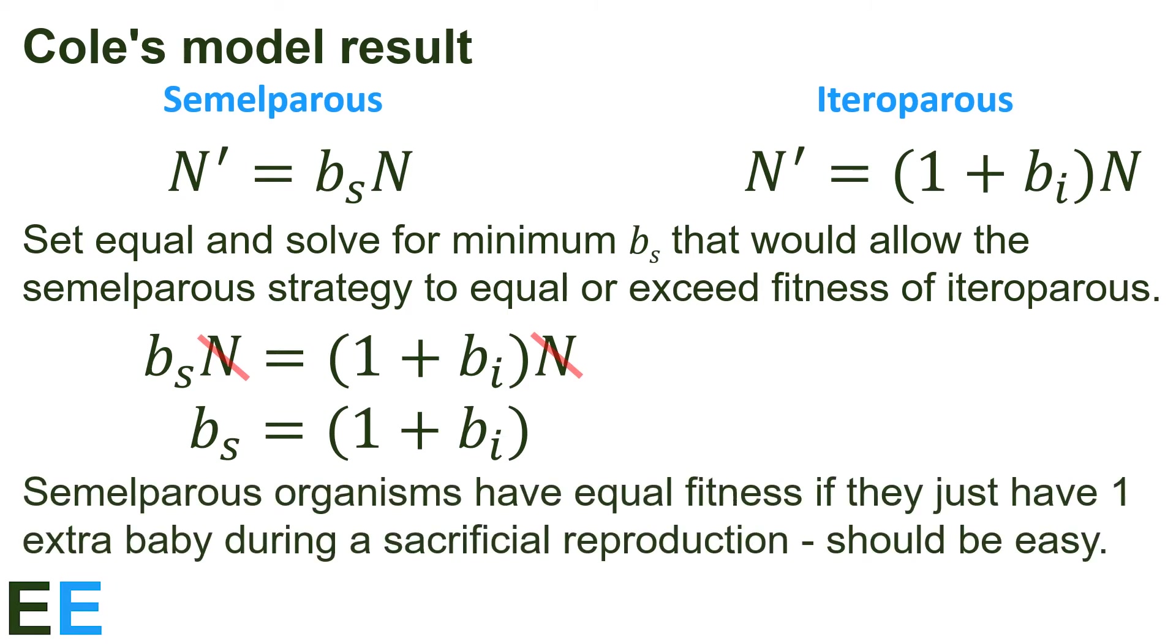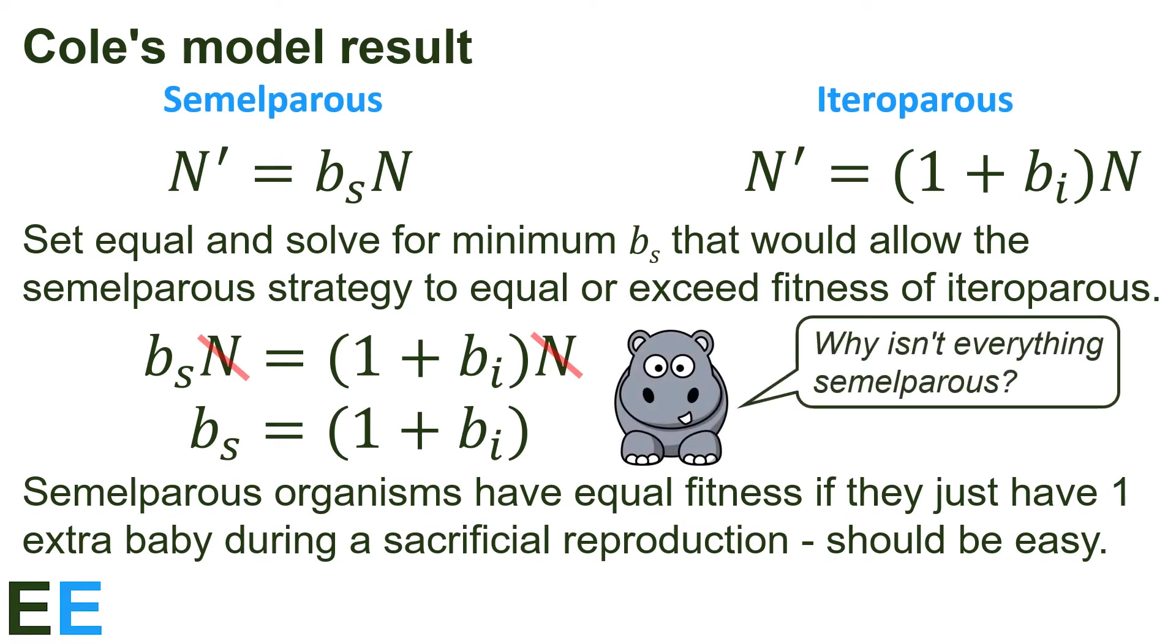Semelparous organisms will have equal fitness to the iteroparous ones if they have just one extra baby during a sacrificial reproduction. And they'll have higher fitness if they can manage two or more. By not saving any energy for future survival, it should be easy for many animals and plants to squeeze out just two or more extra offspring. Based on this, why isn't everything semelparous?